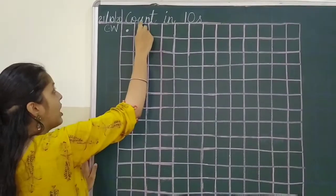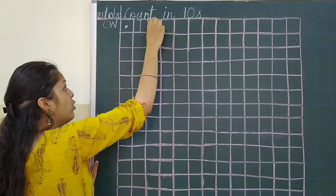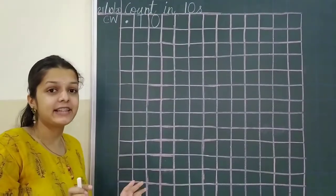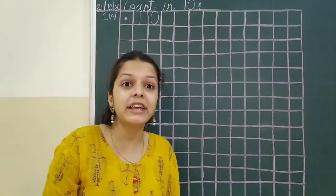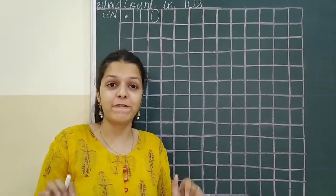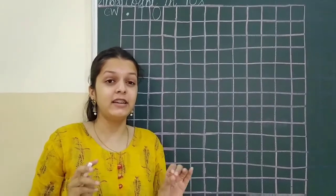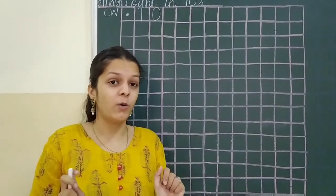Yes. So now we will write one, zero, ten. Now we are counting in tens. So we have to keep space. Ten numbers space in between. Okay.